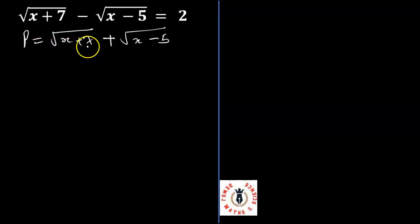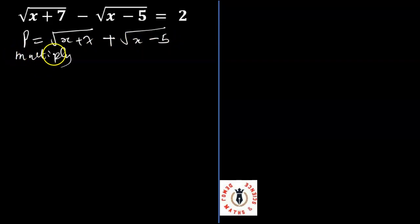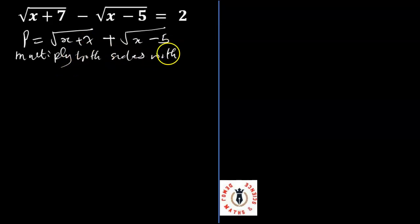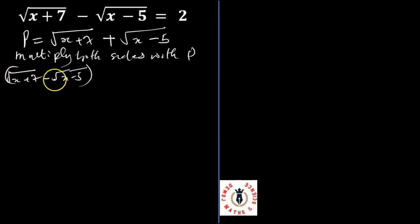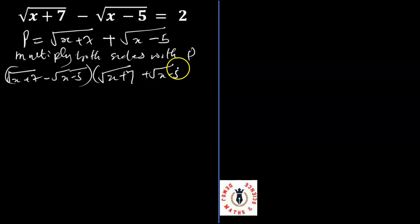Now, if P is equal to the root of x plus 7 plus the root of x minus 5, let's multiply both sides with P. So we have: the root of x plus 7 minus the root of x minus 5, into the root of x plus 7 plus the root of x minus 5, equals 2P.